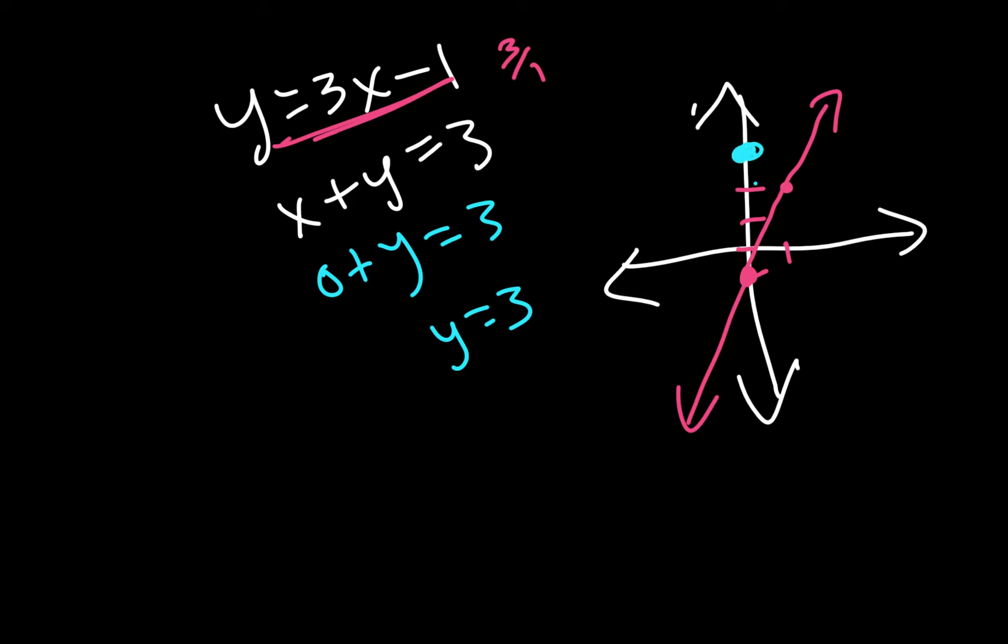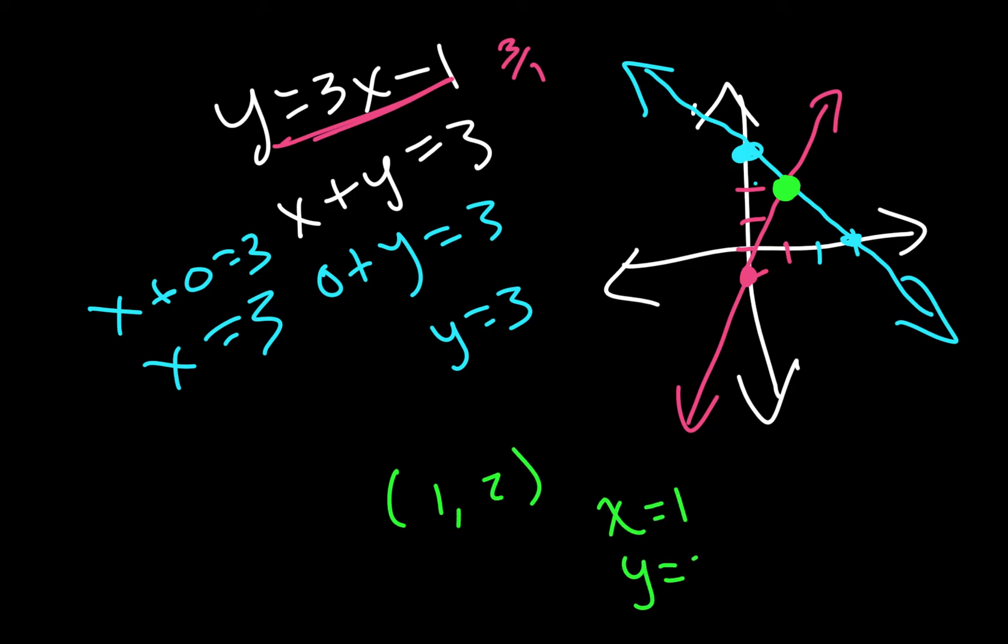Now, the other equation, we can either solve it to be in slope-intercept form, or we can use the intercept method. Just so I'm showing you a different method, I'm going to use the intercept method. So I'm going to plug in a 0 for x first, and that's going to leave me with y equals 3. And then if I plug in a 0 for y, I get x plus 0 equals 3, and that leaves us with x equals 3. We can see where those cross. We can see that it's crossing about right there, which is going to be x equals 1, y equals 2.